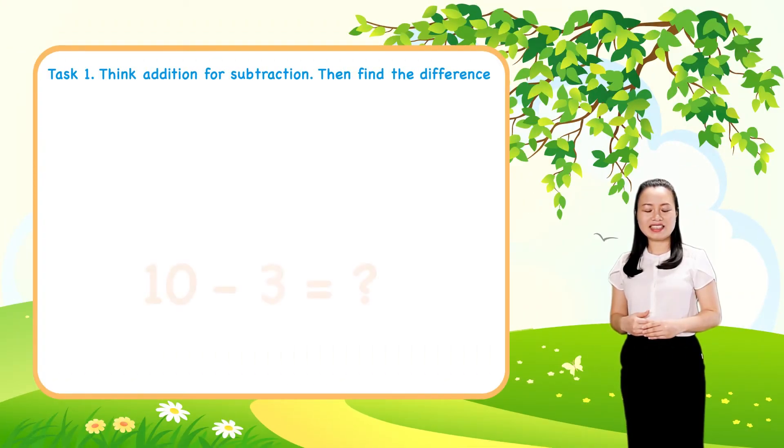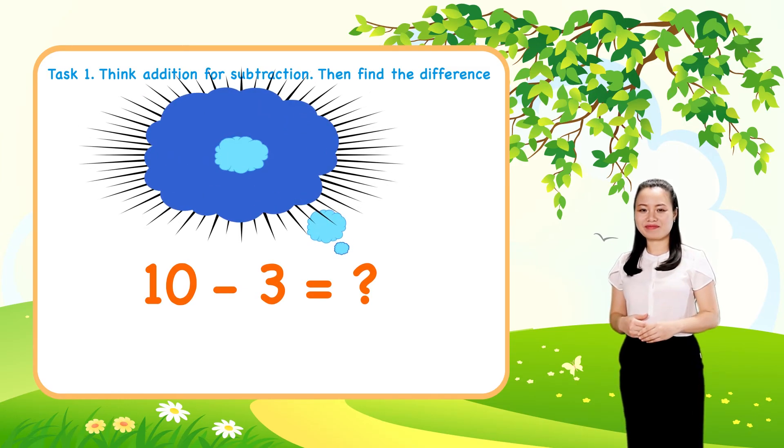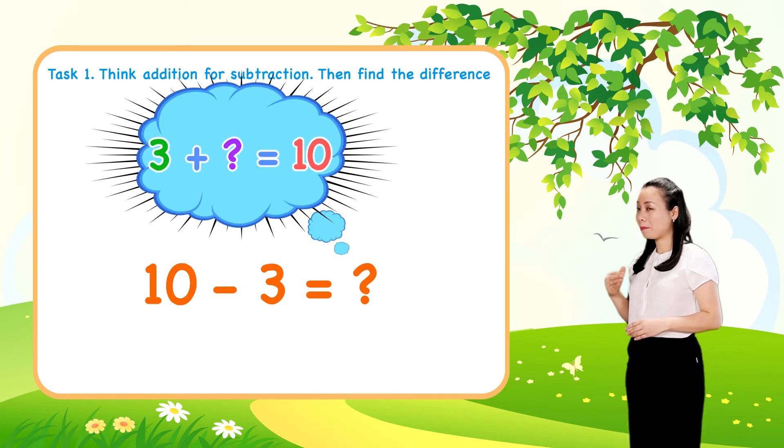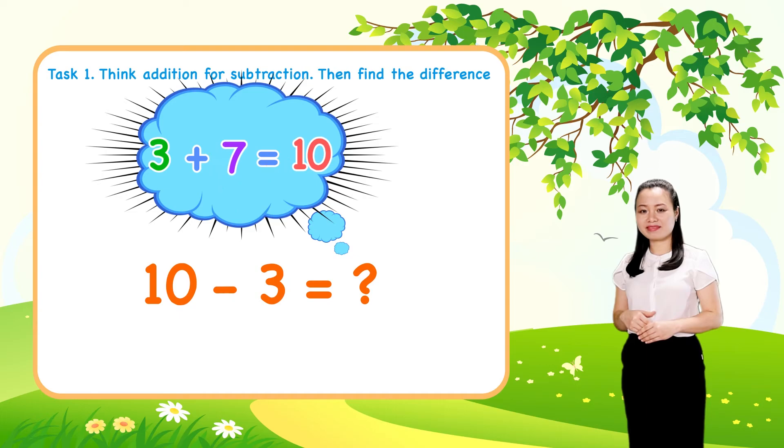Next, think 3 plus 7 equals 10. So 10 minus 3 equals 7.